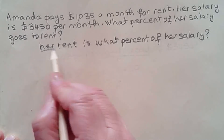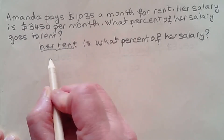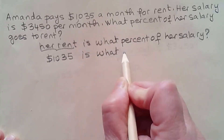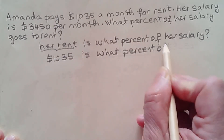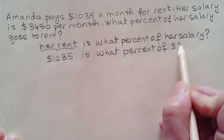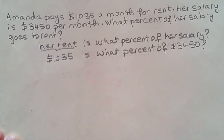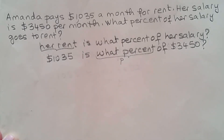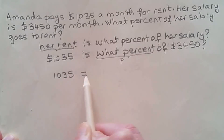We already have her rent. Her rent is $1,035. So $1,035 is what percent of her salary? Her salary is $3,450. We've done problems like this before — we need to find the percent that's unknown. We can call it P.